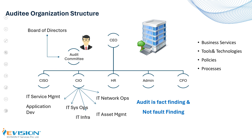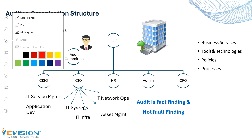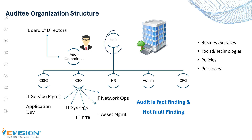As an organization, top management has the priority to ensure that they achieve their goals and objectives. For that, they build business services, tools, technologies, and set up policies and processes like Information Security, IT, and various other departments — they are busy and focused on implementing systems in the organization. However, who is ensuring that the implemented systems are delivering as per what the business expects? That is exactly where the auditor role comes in.